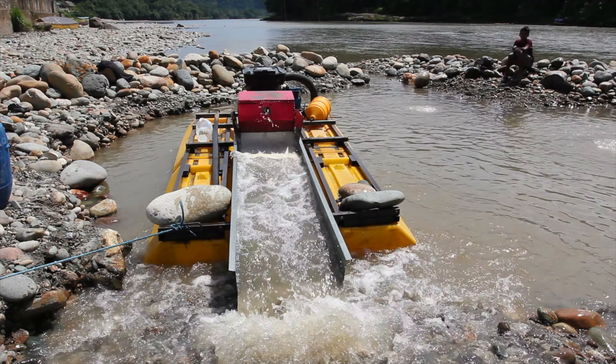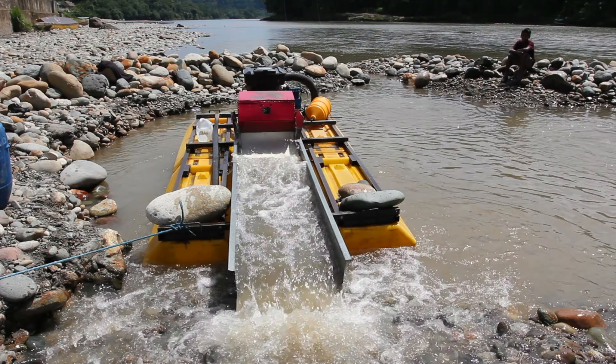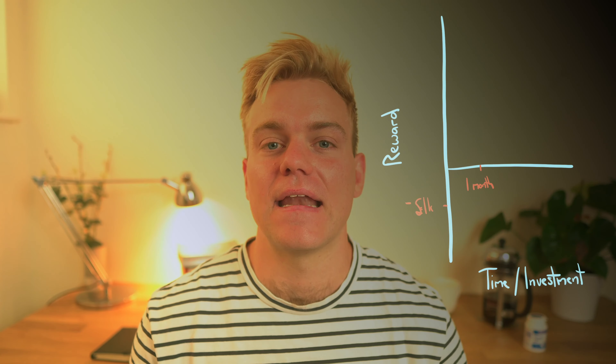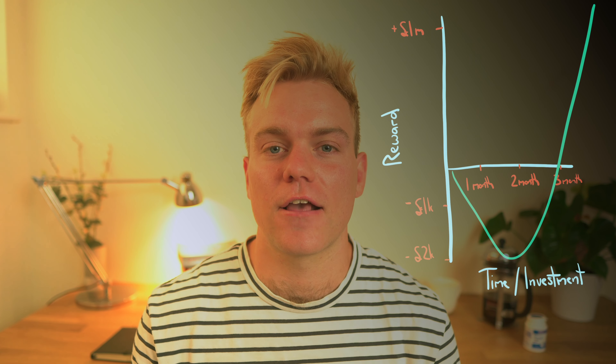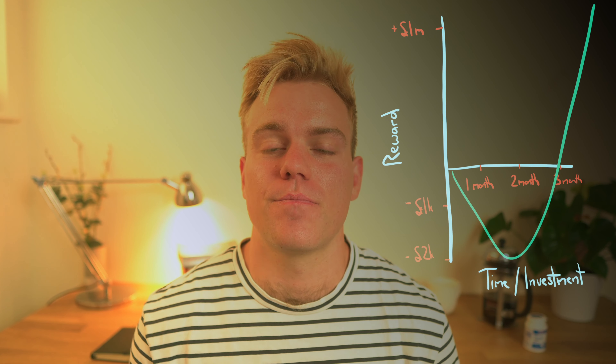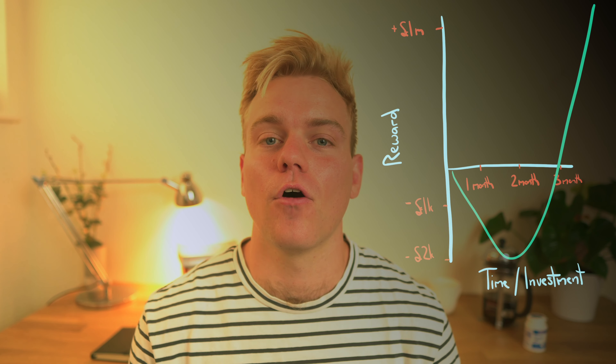Now let's look at the example of exponential risk using the gold prospector. Every minute the gold prospector is working and not finding any riches, his reward is actually going down because he's not seeing any benefit from the investment he's made. However, as soon as he finds a nugget or a vein, the reward spikes massively, resulting in this exponential curve. The gold prospector could potentially spend a lifetime panning for gold and find nothing, or he could find a vein within the first 20 minutes of working. This is the nature of exponential risk — it's incredibly unpredictable, and the chances of seeing any upside are very, very small.